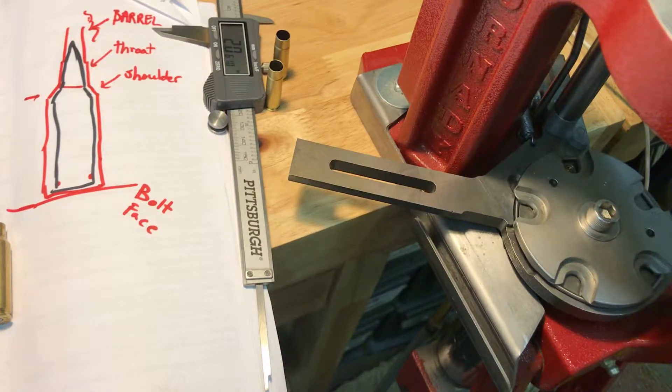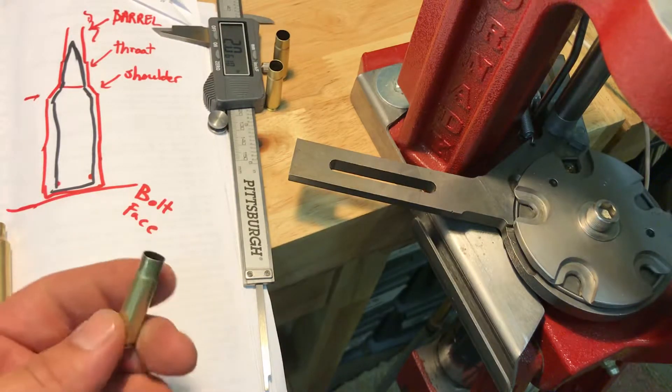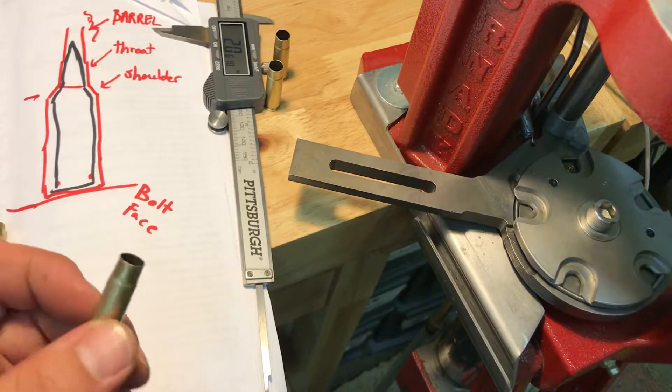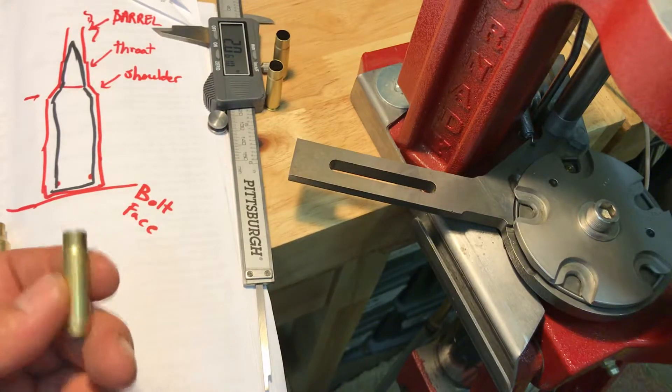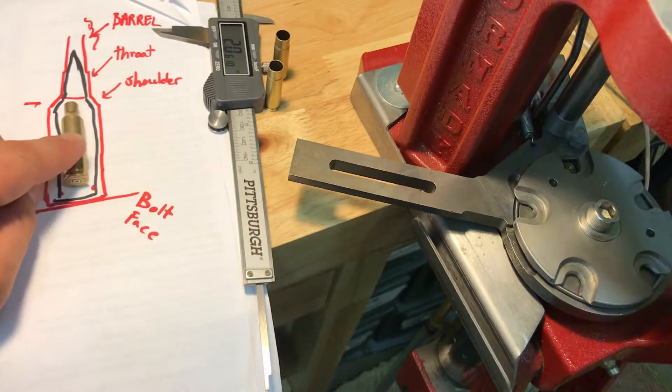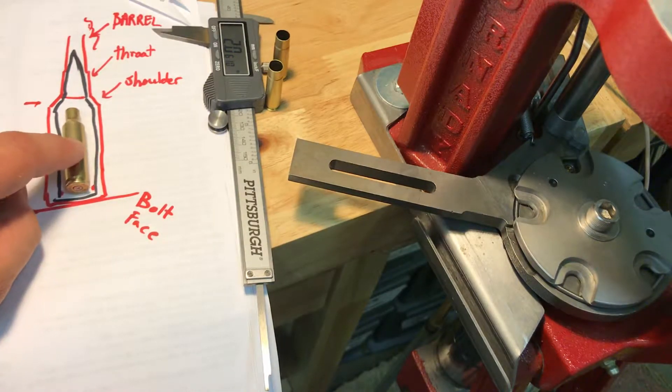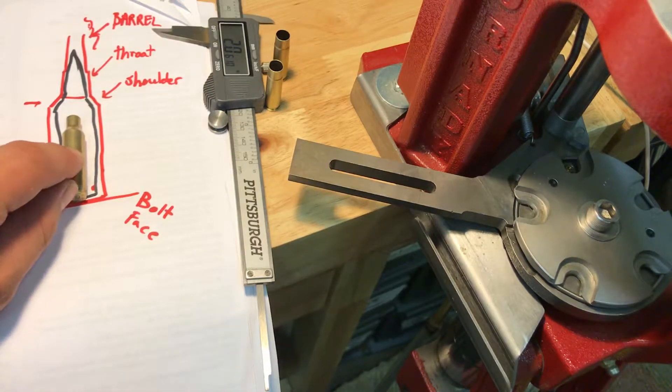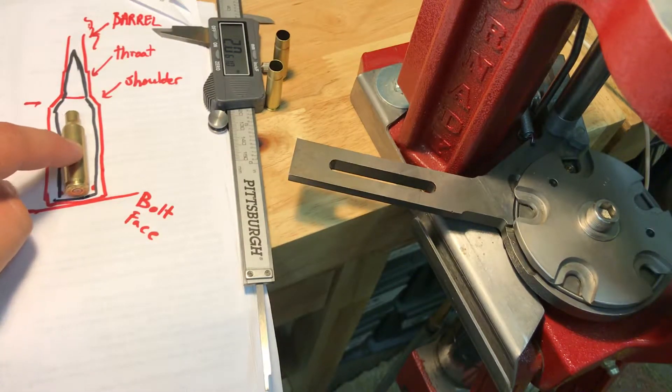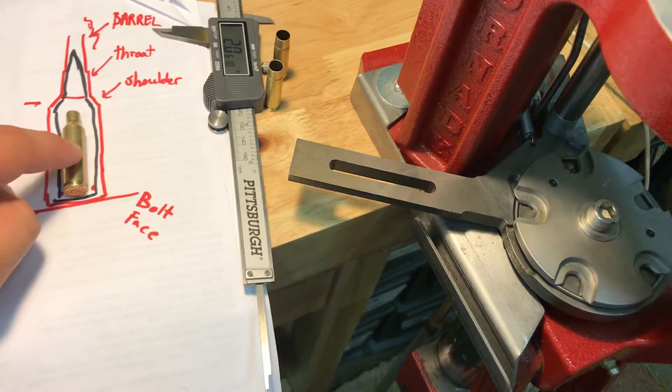You're going to need some fireform brass to do the sizing, and what we're going to do is properly tune or size our cases to our chamber. The reason being is when you normally get a factory load, they try and size it to where it will chamber in almost all situations and chambers and rifles and different configurations. When we tune it, we're going to reduce the amount of slop in our chamber.